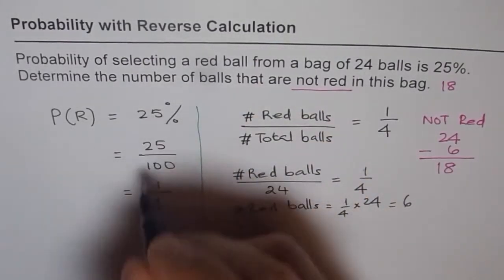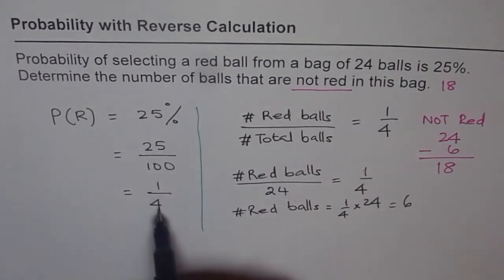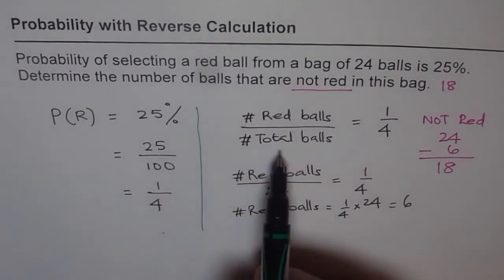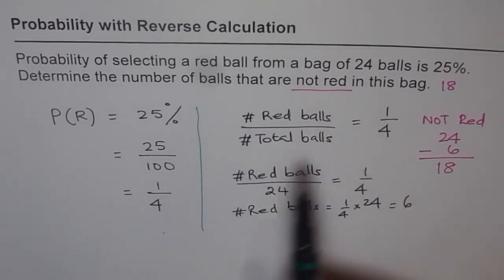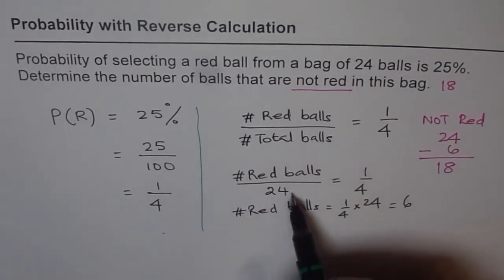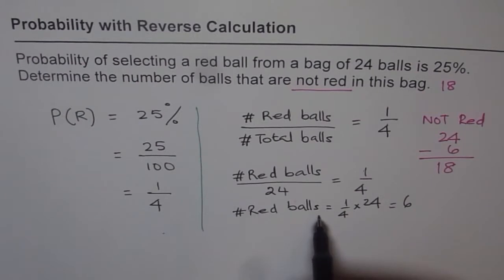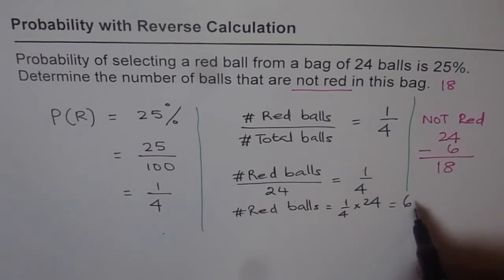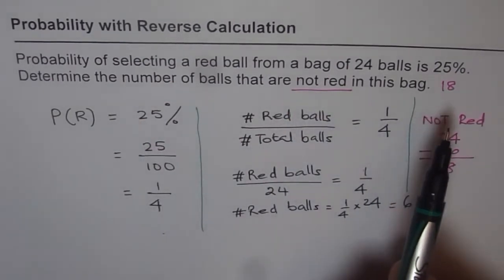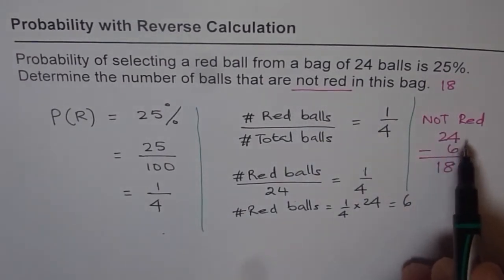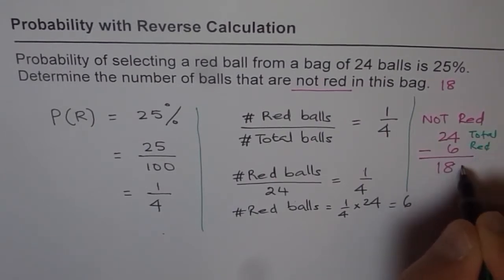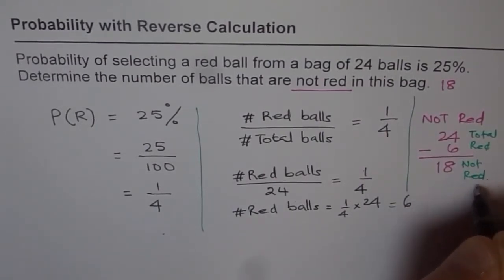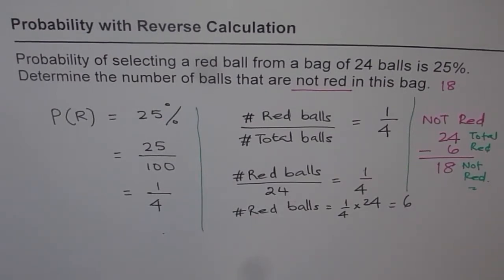First we understood what probability as a percentage means in terms of fractions. Then from the definition of probability, number of red balls over total number of balls equals one over four. We cross-multiplied to find that red balls are six. Then we got the answer for balls not red: total number of balls minus red balls equals not red. Total minus red gives us 18.